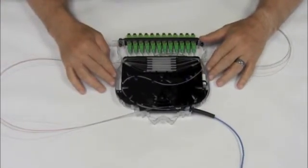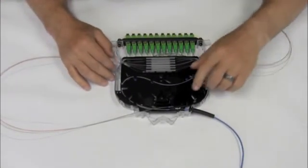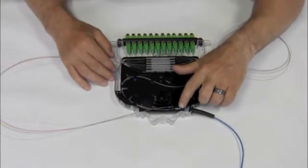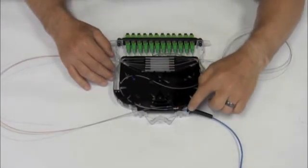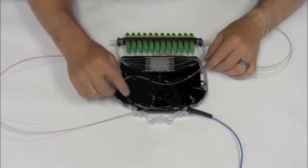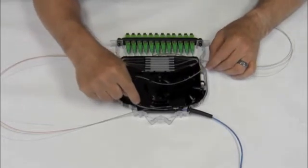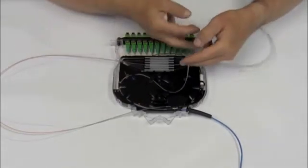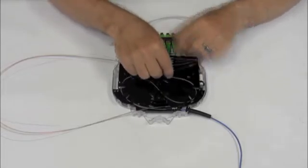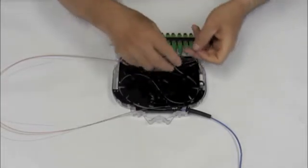When splicing a right exit cassette, the process is very similar. We still tie onto the cassette right behind the mark. We still insert the boot. The only difference is when we store our slack, we bring the 250 micron in an S pattern as so before we start doing our loops.